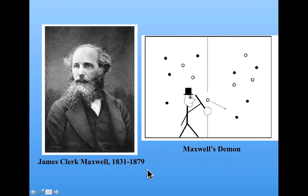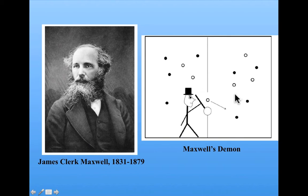Not the scary kind of demon, but simply a very smart, very small being who can measure the speed of the molecules as they whiz past him. In Maxwell's formulation, this demon opens the door to let the fast molecules go from the left side to the right side, and closes it when a fast molecule is coming from the right towards the left. Similarly, he lets slow molecules go from right to left, but not vice versa.